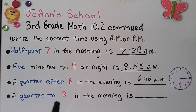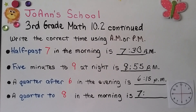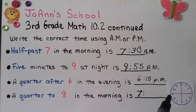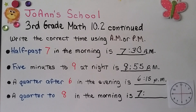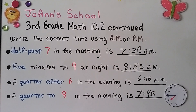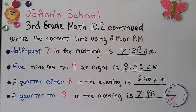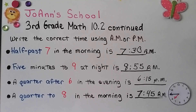This one says a quarter to eight in the morning. It's not eight yet, so the hour is still seven. A clock face can be split into four quarters, so a quarter to eight means the minute hand would be pointing to the nine — that's 5, 10, 15, 20, 25, 30, 35, 40, 45 minutes. The hour hand would be almost at the eight. It says in the morning, so if you said A.M., you're right — it's 7:45 A.M.